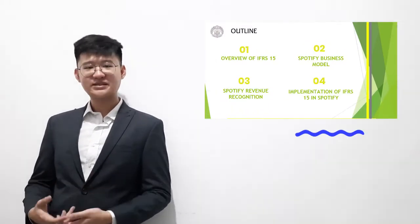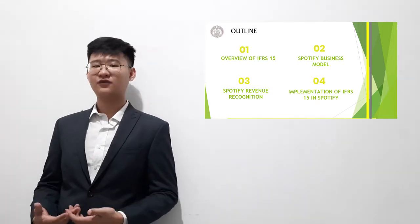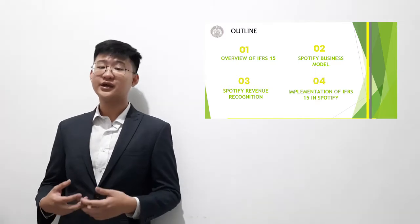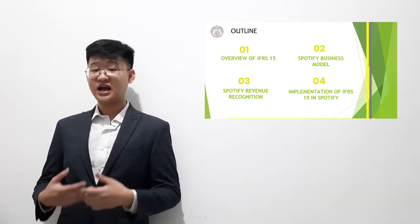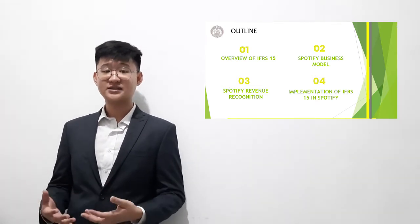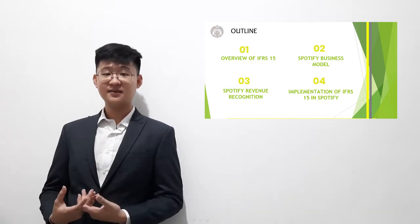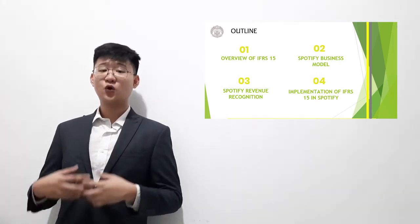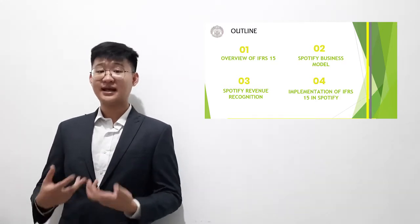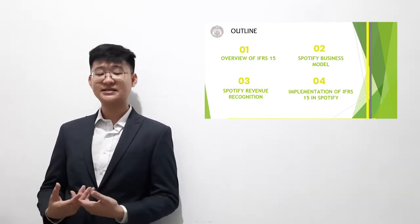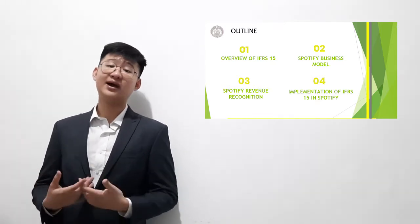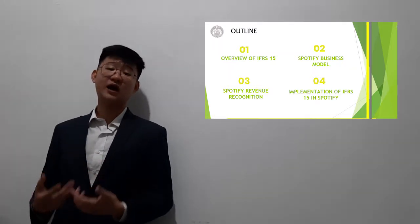Before I begin our presentation today, I will start with the outline. We will give an overview of IFRS 15 regarding revenue from contracts with customers, especially the five steps of revenue recognition. Next, we will understand the business model of Spotify — its product offerings, user base, and pricing scheme. Then we'll do a deeper analysis of Spotify's revenue scheme, and finally we will see how Spotify aligns with the implementation of IFRS 15.